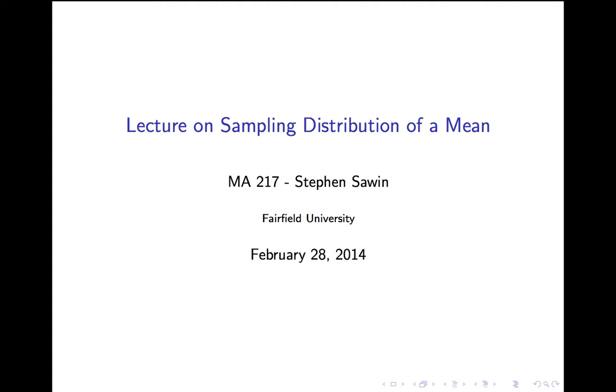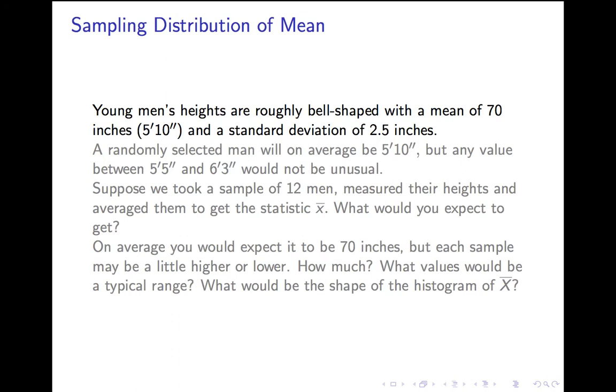This is the lecture on the sampling distribution of the mean. This goes along with the previous lecture on sampling distribution of the proportion. This will be almost perfectly analogous to it. We'll cover the same material, except where before we had a categorical variable, now we will have a numerical variable and look at its mean.